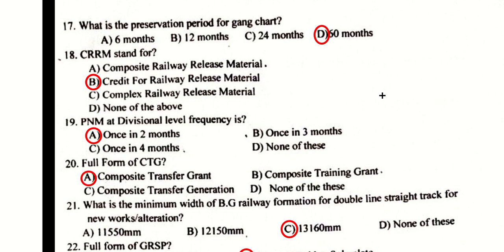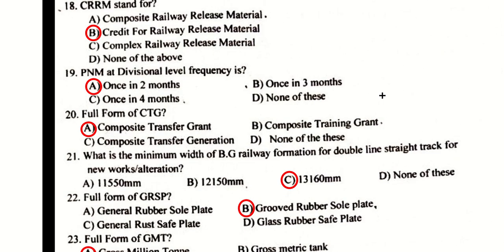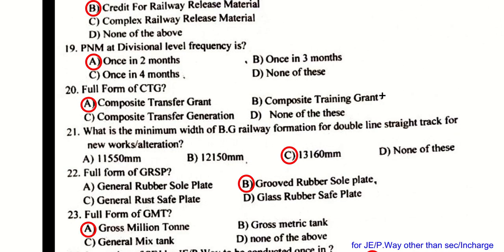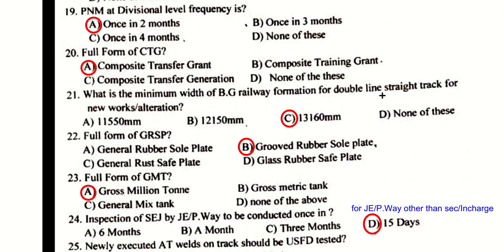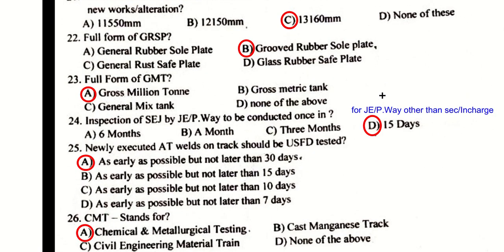CRRM stands for Credit for Railway Released Material. P&M at division level frequency is once in two months. The full form of CTG is Composite Transfer Grant. The minimum width of BG railway formation for double line straight track for new works or alterations is 13,160 mm.